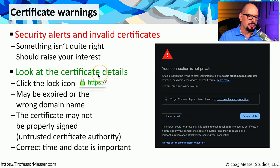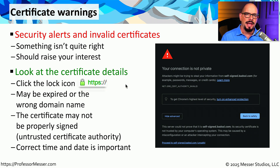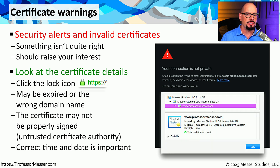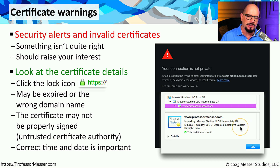Most browsers allow you to click or right-click on the lock icon associated with that HTTPS connection, and this will bring up a view of the certificate on that system. This provides us with additional details about this certificate — for example, who issued this certificate, when it expires, and more details about how this certificate was originally created.